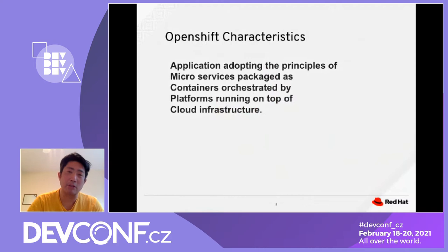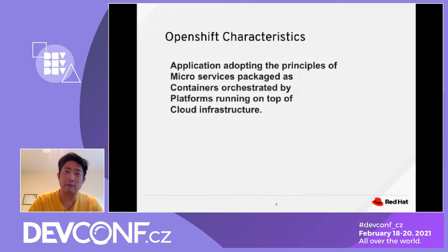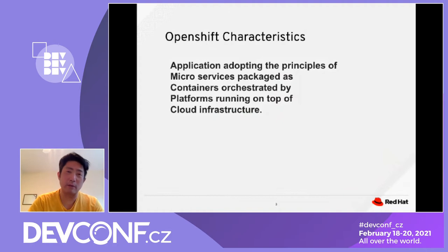When we think about OpenShift, what does OpenShift mean? The characteristic of OpenShift is an application adopting the principle of microservices, packaged as containers orchestrated by a platform running on top of cloud infrastructure. From here, we can focus on application, microservices, container, and platform to see how we could improve the quality.